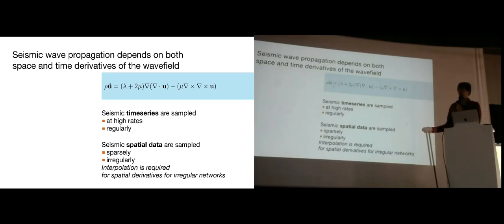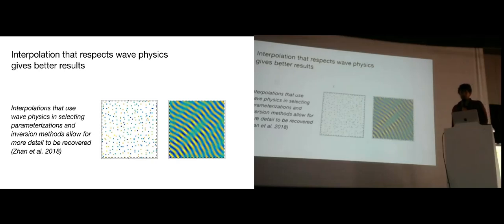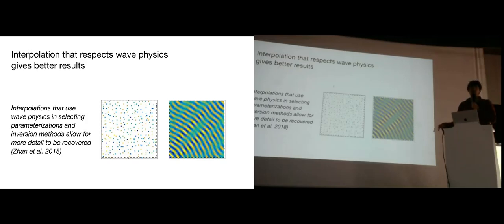We now have very good instrumentation that gives us good access to the seismic time series. But when we have spatial data, we're normally sampling it sparsely and irregularly, so calculating these derivatives is extremely challenging. Some kind of interpolation is required, and we need to put some prior information on our interpolation in order to actually calculate these derivatives. The idea we pursued is to use compressive sensing to make these spatial derivatives work — basically, if you do interpolation that respects wave physics, you can get a much sparser compressed representation of your signal.